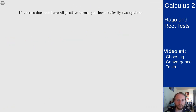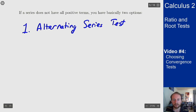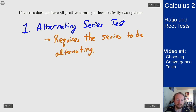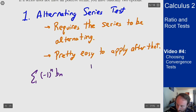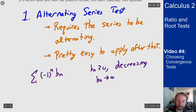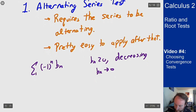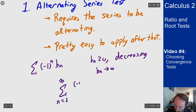If your series doesn't have all positive terms, there are really only two ways to figure out what happens. The first option is the alternating series test. This requires the series to be alternating, but once you have that it's pretty easy to apply. All you need is that your series is of the form (-1)^n · b_n where b_n is positive, decreasing, and converges to zero — then you get convergence. For example, (-1)^n over √n converges by the alternating series test.